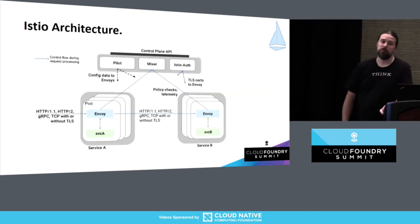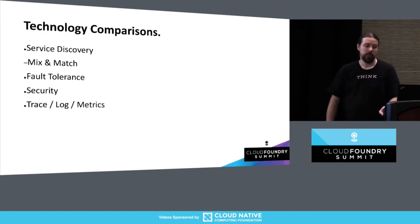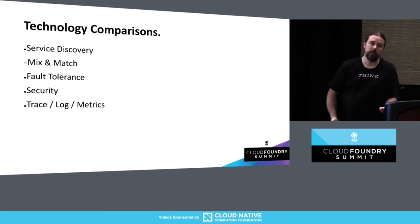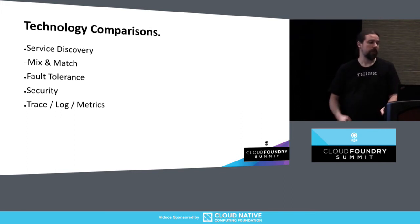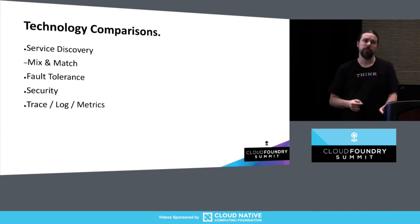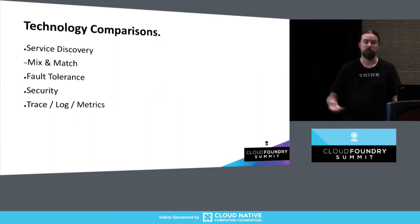So hopefully at this point, when you see the Istio architecture diagram floating around on their website, you'll have an idea of what each of the different parts are there for. That's pretty much it for the overview of Istio. Now we start looking at how each of the different capabilities compares between Istio, Spring, and MicroProfile. We're going to look at service discovery, fault tolerance, security, and then trace, log, and metrics.